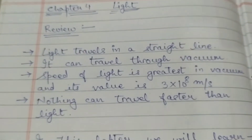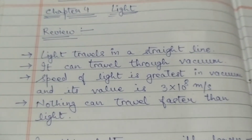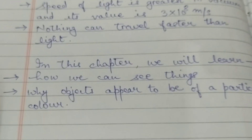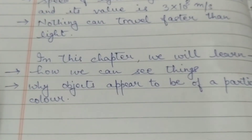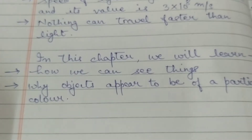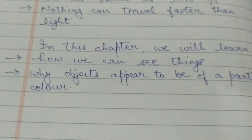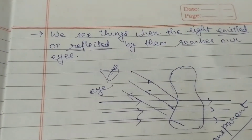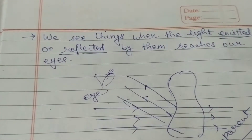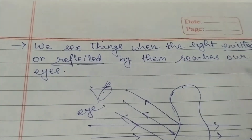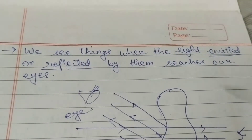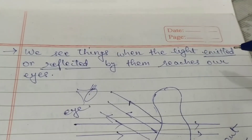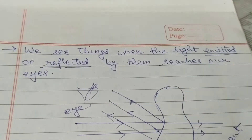In this chapter we will study how we can see things and why objects appear of a particular colour. How do we see things? Whenever the light that is emitted or reflected by any object reaches our eyes, we can see that object. Here I am using two words: emitted and reflected.